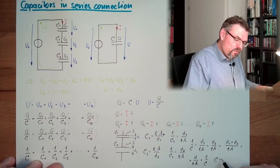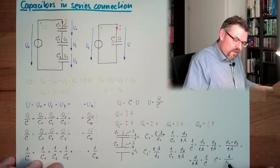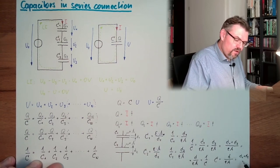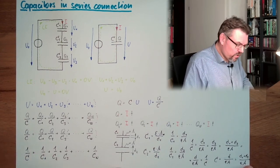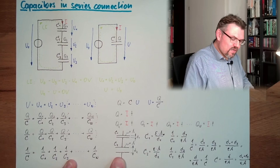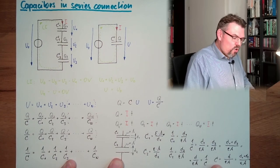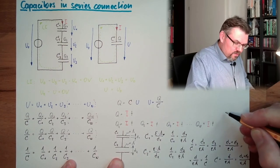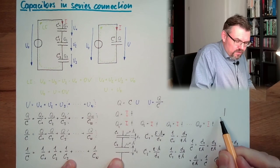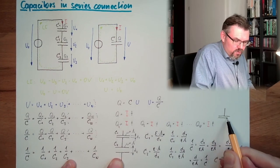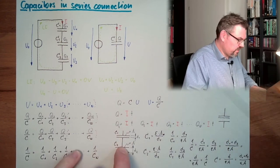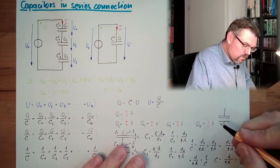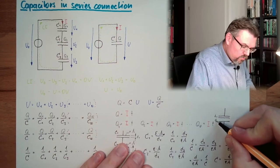So c equals epsilon a divided by d, which is epsilon a divided by d1 plus d2. So actually what we see here is a replacement capacitor, which looks like that. We can think about that, that we have here the two capacitors next to each other.